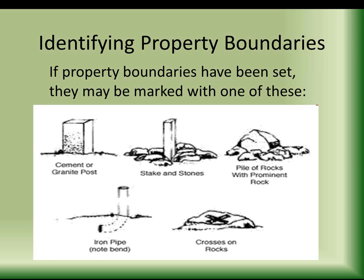If a survey has been done on your property, you'll most likely find some kind of monument if they placed one on the corners. For a very important corner like a township corner, you might find a cement pedestal with a brass disc on top that describes exactly where it is. Most of us don't live in those locations, so if there is a monument, it might be a stake, a pile of rocks, a cross on top of rocks, or just an iron pipe with a bend in it to keep it in the ground — if the survey was done and the monument hasn't been knocked over.